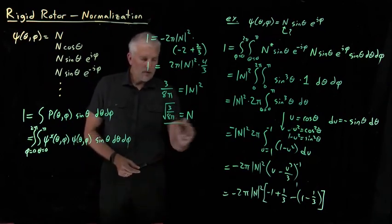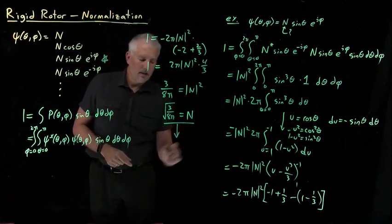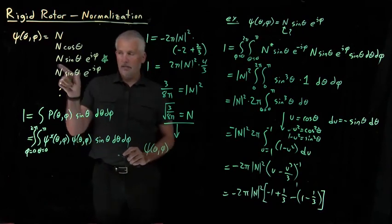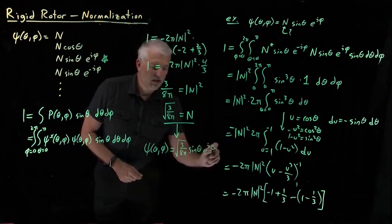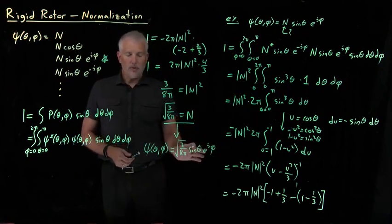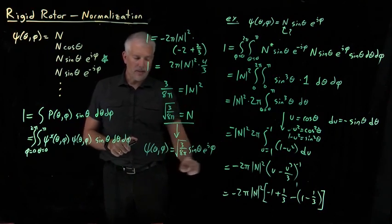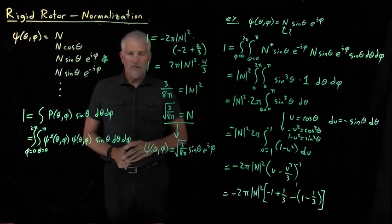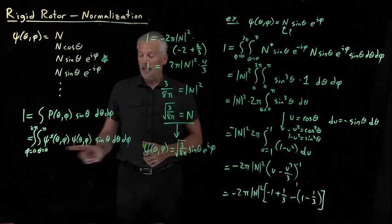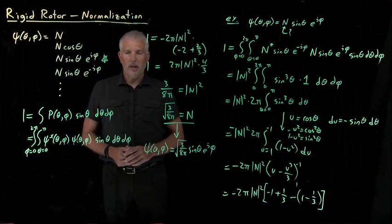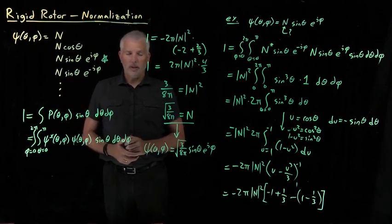So we've solved for the value of n, which means we now understand the wavefunction more completely. This particular wavefunction is not just n times some unknown constant, but equals the square root of 3 over 8 pi times sine-theta times e to the i-phi. That's what we've succeeded in doing — normalizing the wavefunction. If someone gives us a wavefunction without the normalization constant specified, we can go through this process to determine it. The procedure is tedious, but this lecture has shown you the exact integral to perform and set equal to 1. Sometimes we don't need the normalization constant and can leave it unspecified, but if we do need the value, we can calculate it.